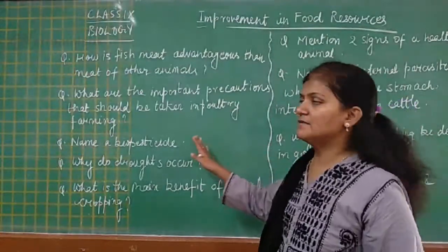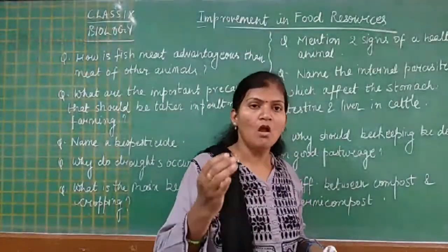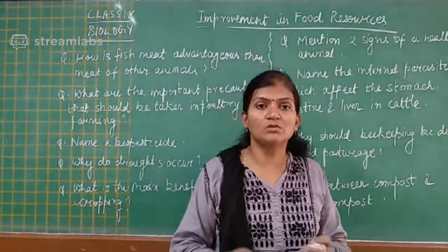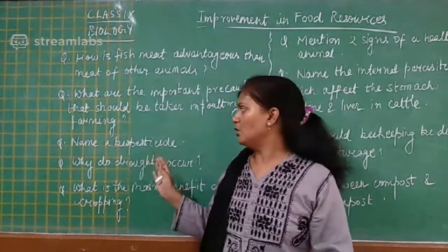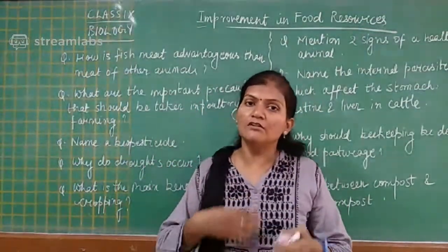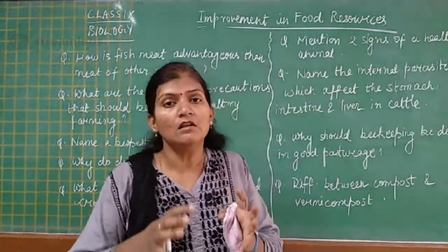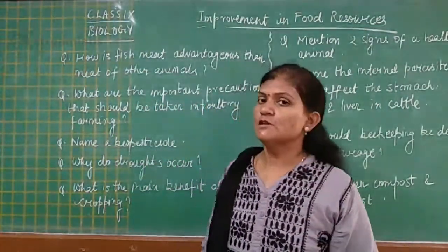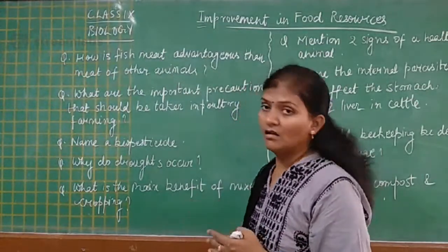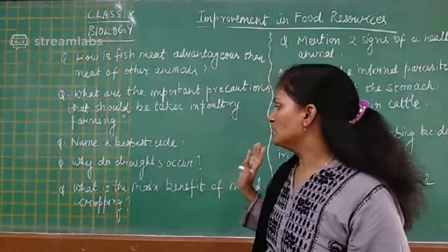The next question is: name a biopesticide. A pesticide is a chemical used to control, kill, or decrease the growth of insects and pests which can harm a crop. 'Bio' means any substance with a living origin. Any substance of living origin that can kill or stop the growth of pests and insects is a biopesticide. Neem is a popular biopesticide which can be used in place of chemical pesticides.